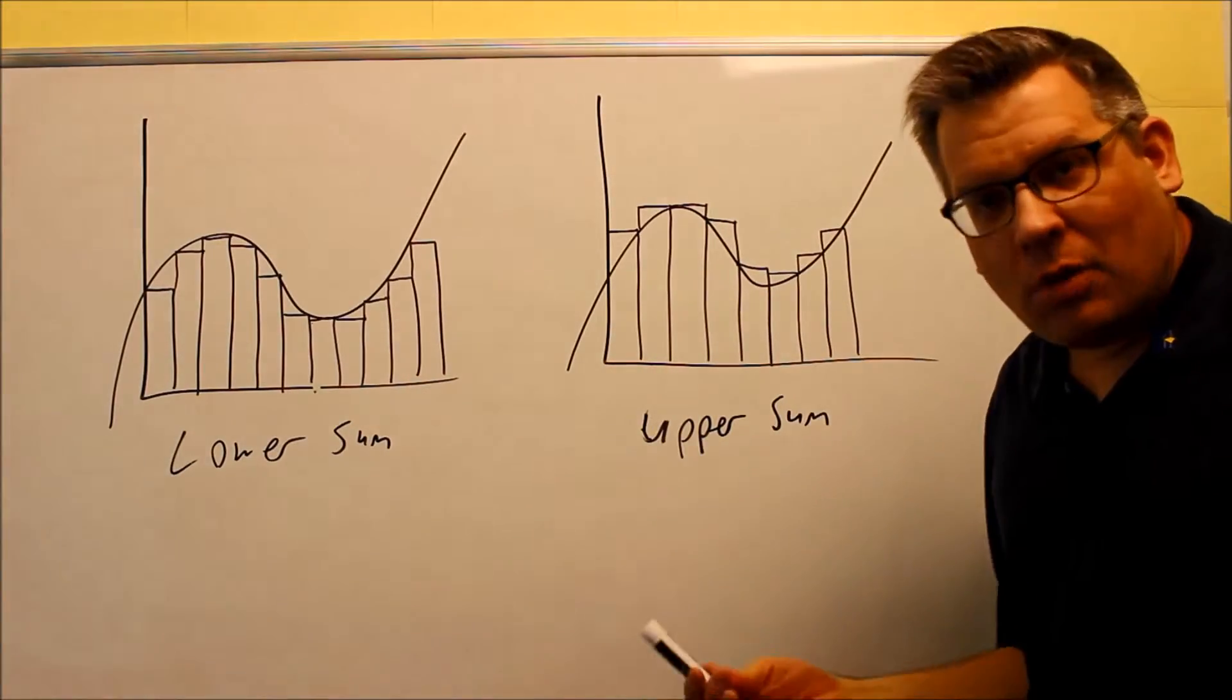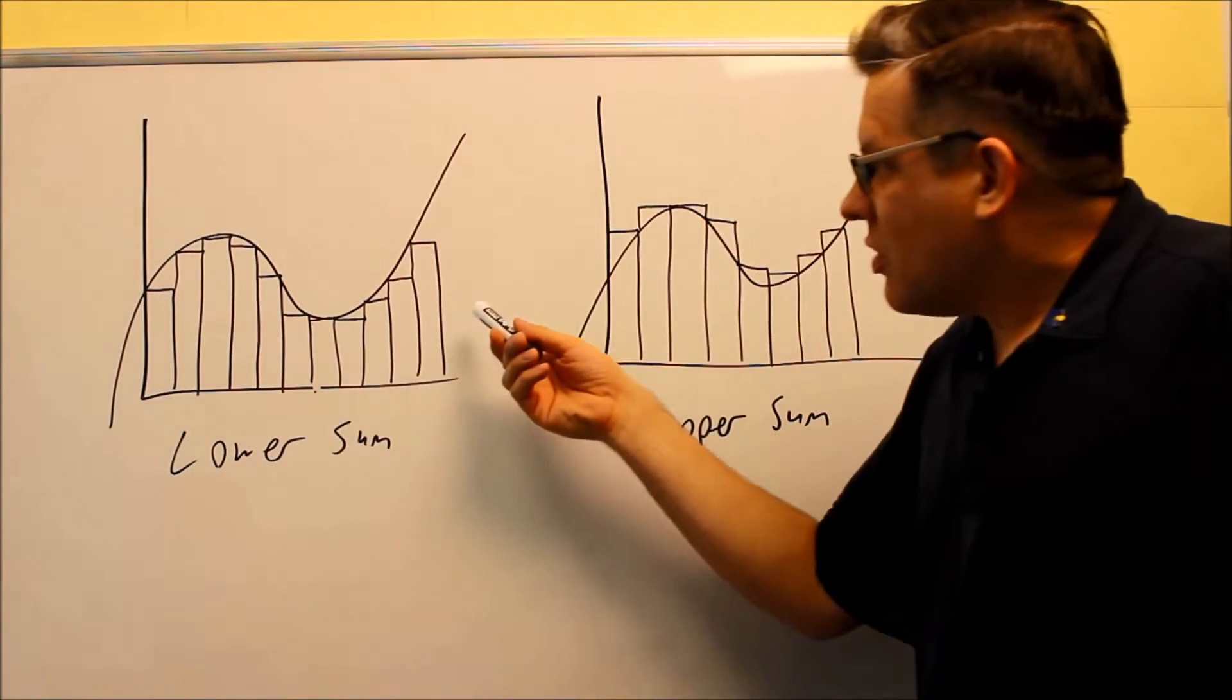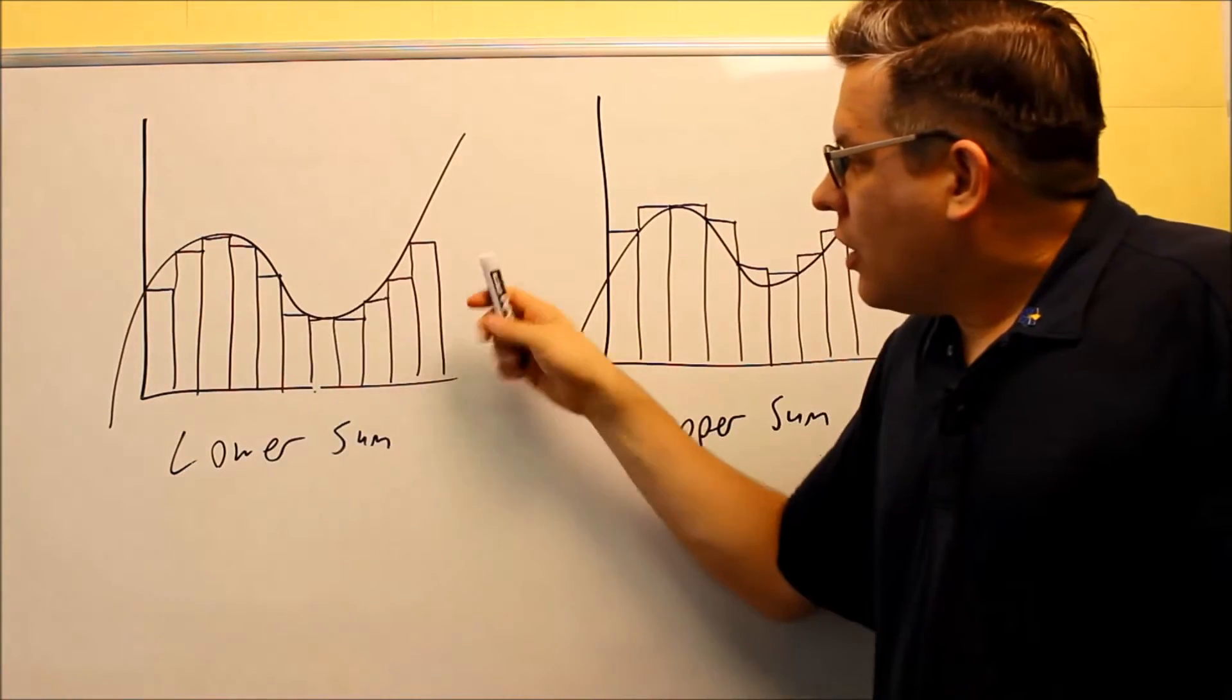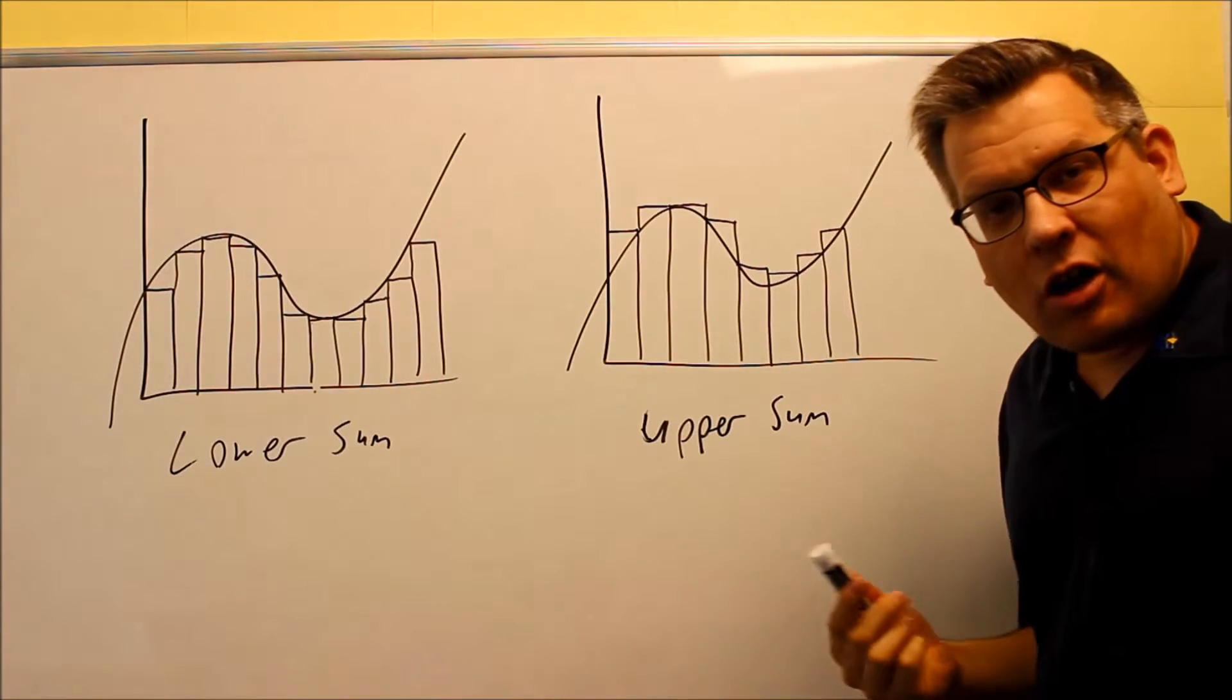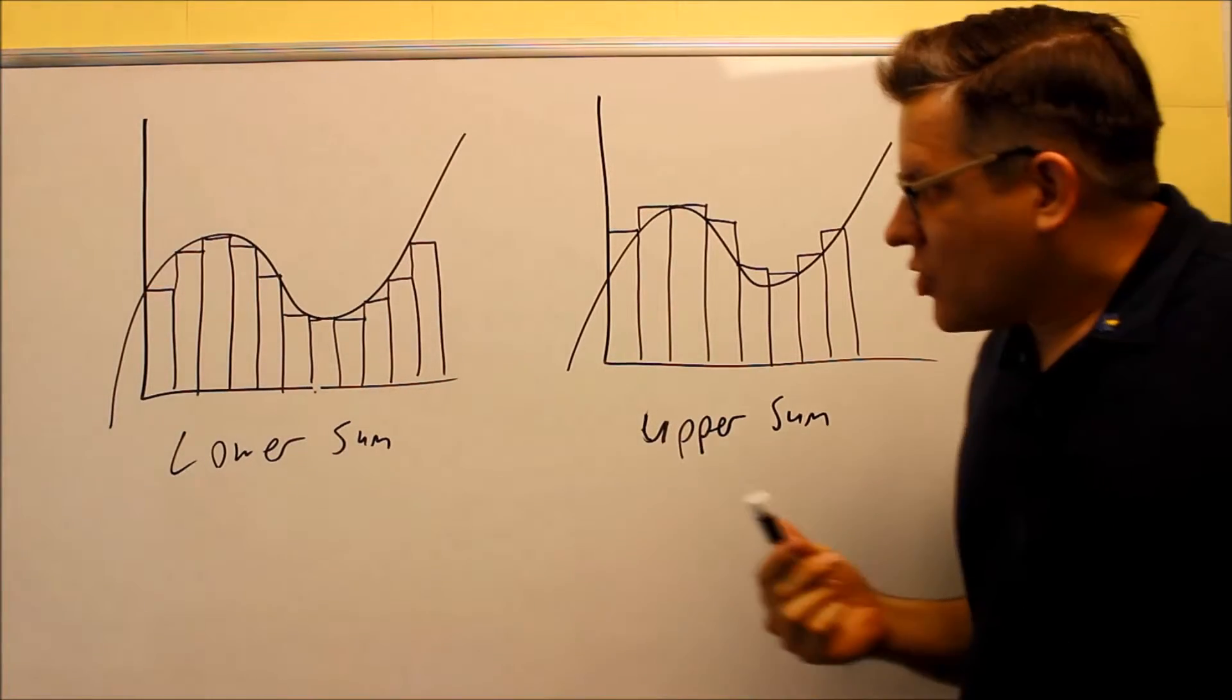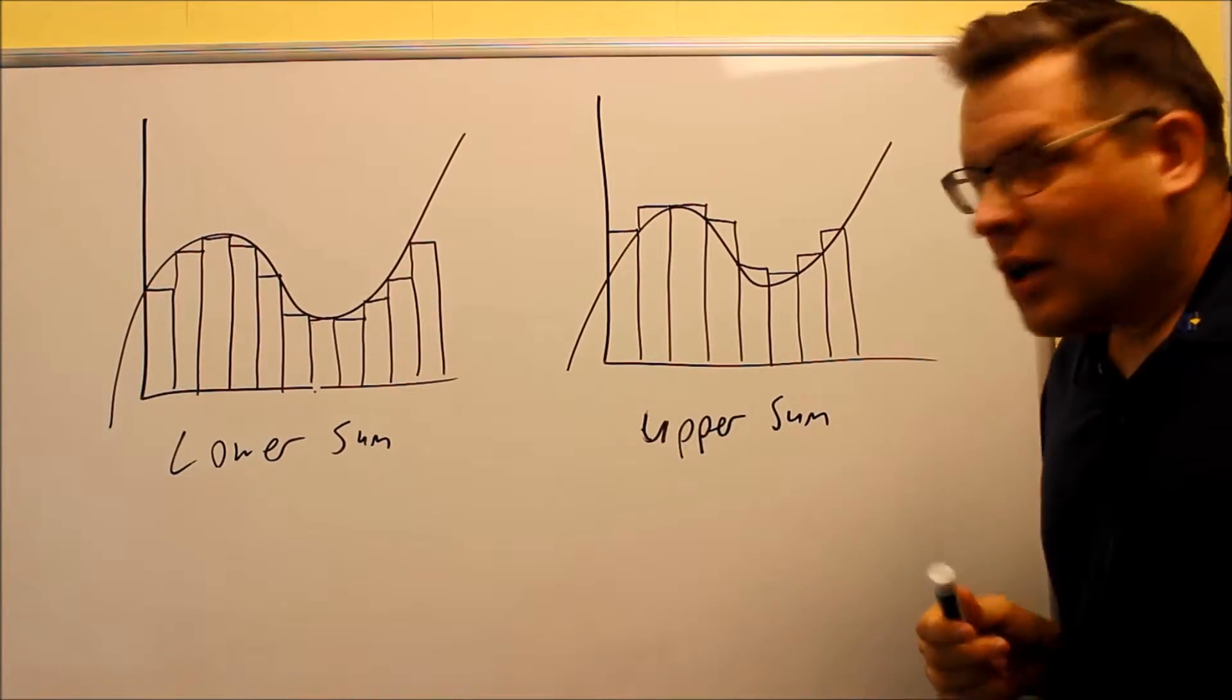So if you can get an infinite number of rectangles, then you could fit an infinite number in. This space is going to go down to zero that's in between there, and then we'll be able to find our exact area. So ideally that's what you want to do on this one.